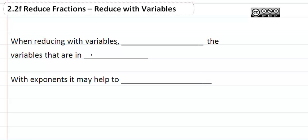When reducing with variables, we divide out the variables that are in common. Just like when we were simplifying a fraction with just numbers, we took out the common factor.